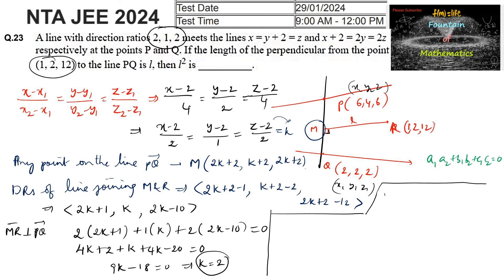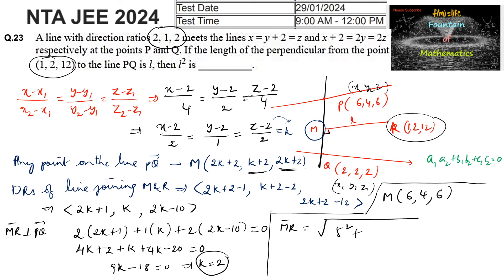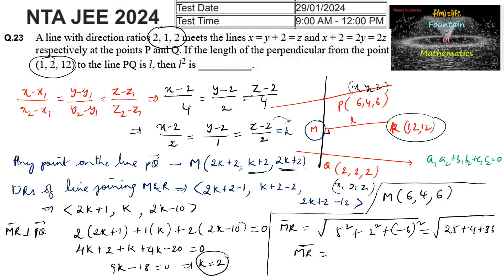With k = 2, point M = (2×2+2, 2+2, 2×2+2) = (6, 4, 6). The length MR = √((6-1)² + (4-2)² + (6-2)²) = √(25 + 4 + 36) = √65. Since MR = l, we conclude that l² = 65.